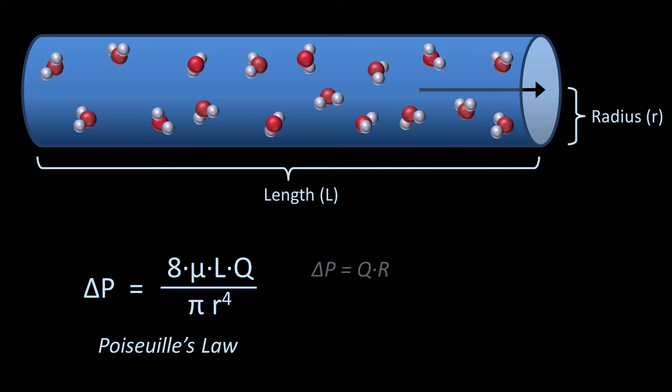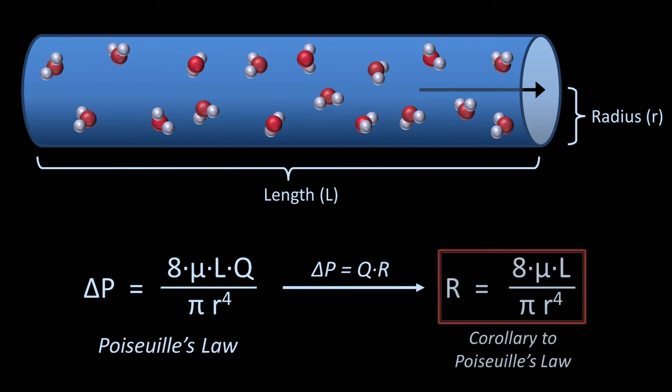If we remember that the pressure gradient equals flow times resistance, we can quickly derive a corollary to Poiseuille's Law, which is more important in medicine than the law itself. The resistance of fluid to flow is equal to 8 times viscosity times L divided by pi times radius to the fourth. The dramatic feature of this relationship, as we'll see in a moment, is that fourth power.